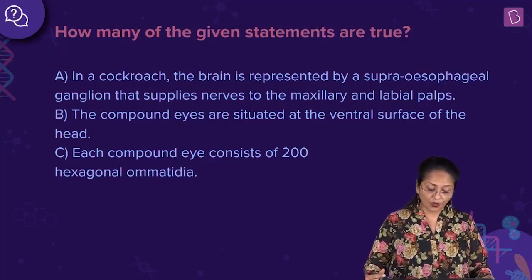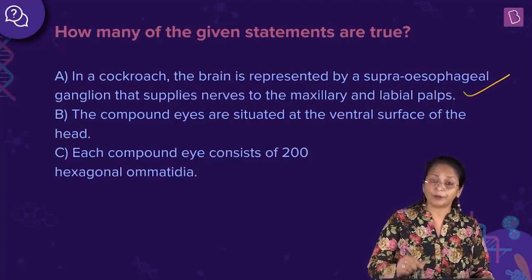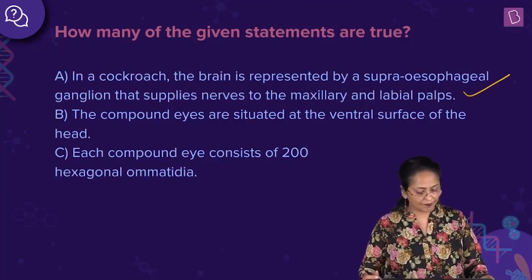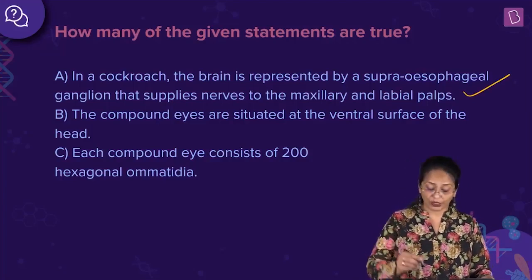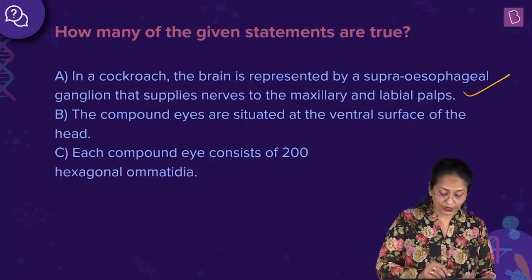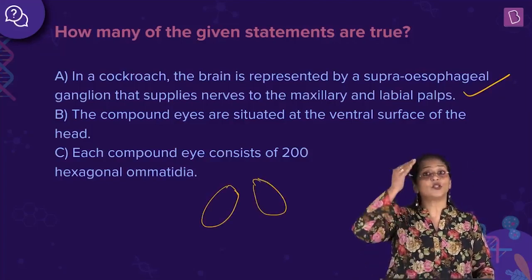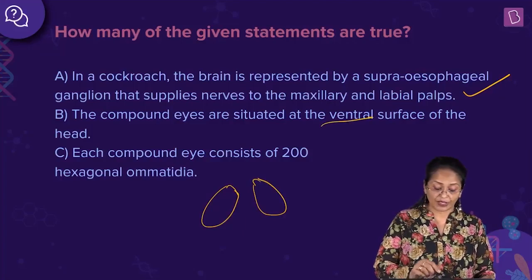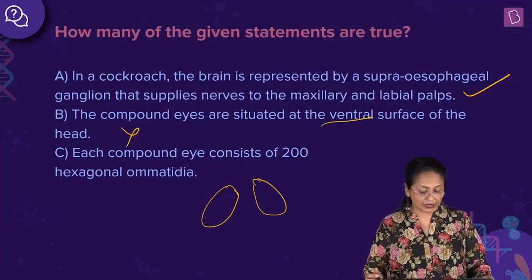The second statement: the compound eyes are situated at the ventral surface of the head. Now if you have noticed the head of the cockroach, you would have seen a pair of compound eyes on the dorsal surface. It is not on the ventral, it is on the dorsal surface, so that statement is incorrect.